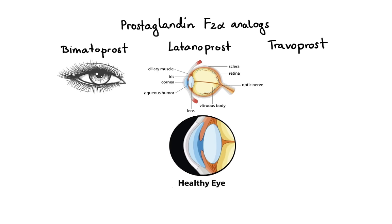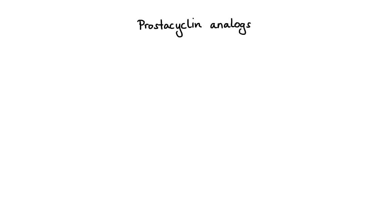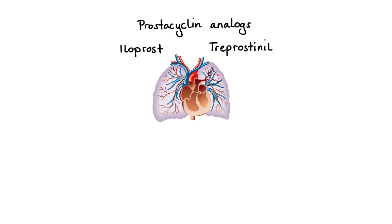The last group is prostacyclin analogs. Examples include iloprost and treprostinil. These agents are used to treat pulmonary arterial hypertension. They work by increasing production of cAMP, which leads to decreased levels of intracellular calcium in pulmonary vascular smooth muscle cells, ultimately causing vasodilation. This results in significant reduction in pulmonary vascular resistance and enhanced cardiac index.